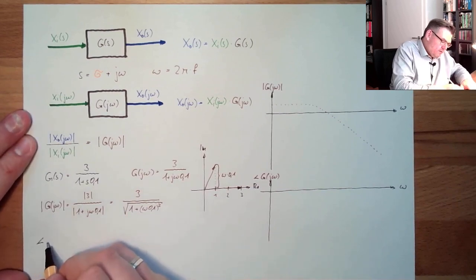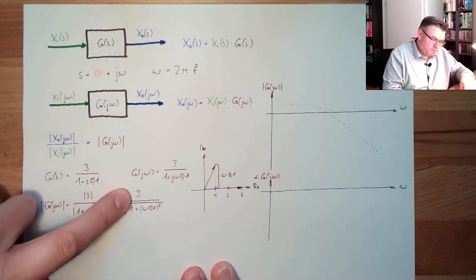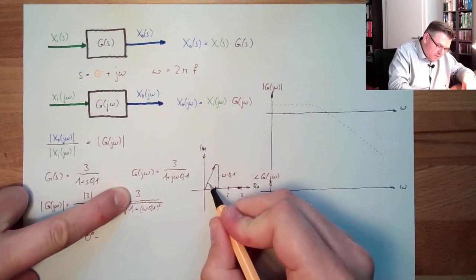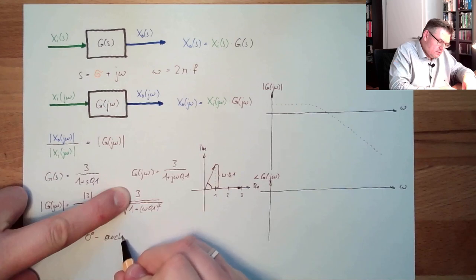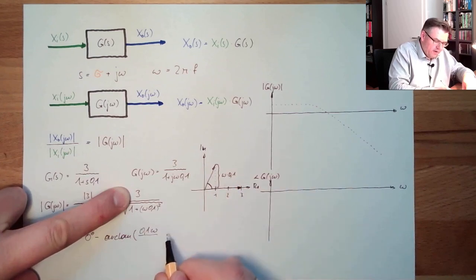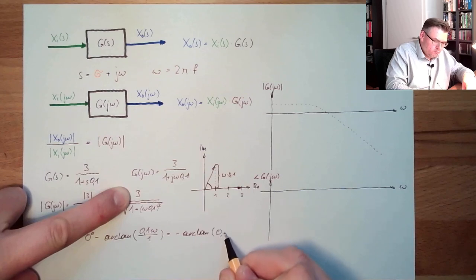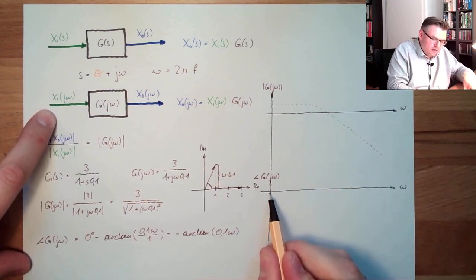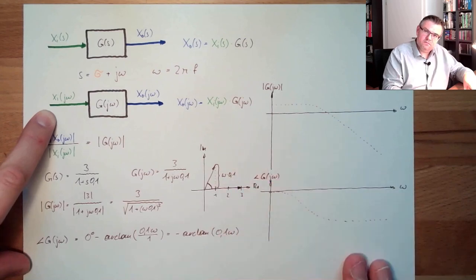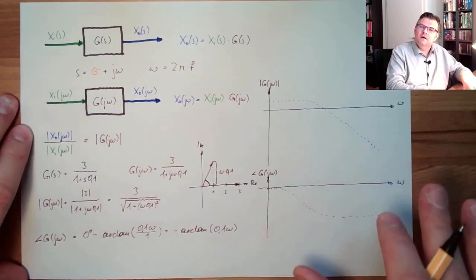Now for the argument part: the argument of the numerator 3 is zero degrees. Minus the angle of the denominator, which is the arctan of (ω·0.1) divided by 1. So we end up with minus arctan(0.1·ω). I can calculate this for several omegas and get the phase curve. This is a delay system — a first-order PT1 system. We will calculate this fully in the next video.